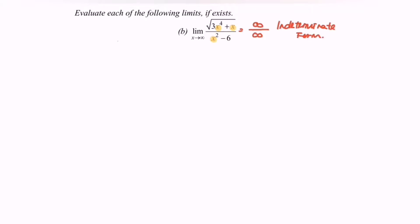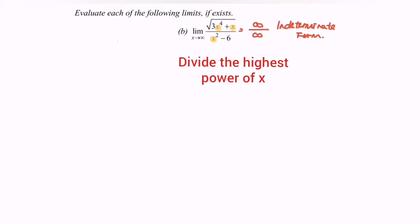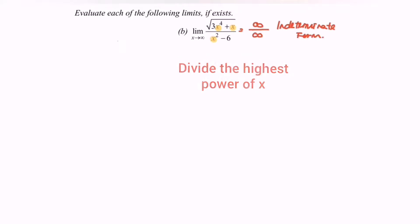For this case, the strategy is to divide by the highest power of x. As we can see in the denominator, the highest power is x squared, so I'm going to factor out x squared.